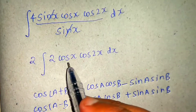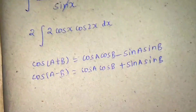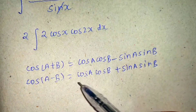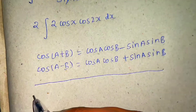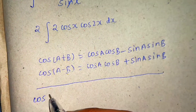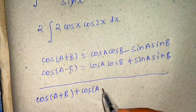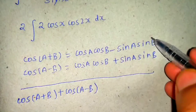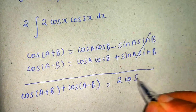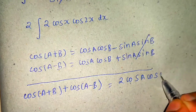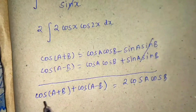I want the formula for 2cosA·cosB. If I add cos(A+B) and cos(A−B), the sine terms cancel and I get 2cosA·cosB. So: 2cosA·cosB = cos(A+B) + cos(A−B).